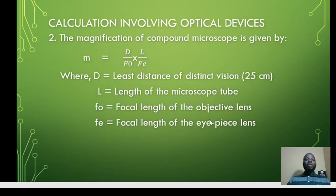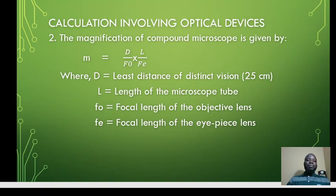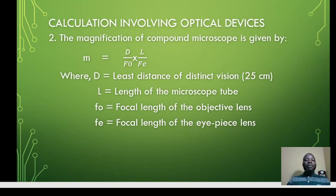The second formula is for calculating the magnification of a compound microscope: M equals D over F-naught multiplied by L over Fe. A compound microscope has two lenses — the objective lens, which is close to the object, and the eyepiece or ocular lens, which is close to the eye. The focal length of the objective lens is F-naught, and that of the eyepiece is Fe. D here is still the least distance of distinct vision, equal to 25 cm.